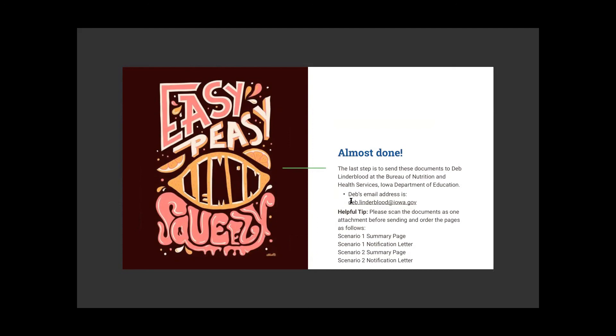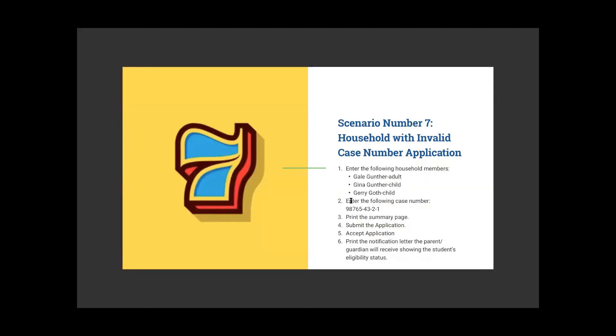Our system has it set that if you have too many or not enough numbers in the case number field, it won't let you proceed forward — I believe it requires ten numbers. So it won't let you enter the wrong amount. We can't guarantee they're typing the right numbers, but it will enforce the correct count. Scenario seven actually has one number short in the case number, so it does not let you proceed.